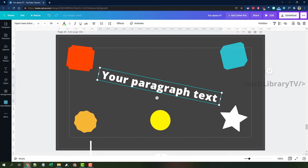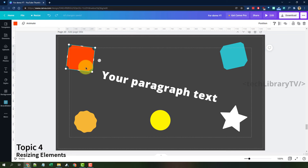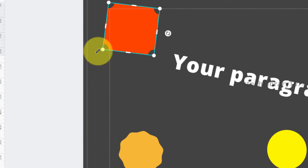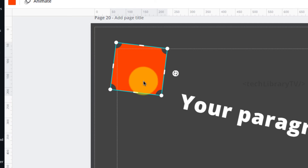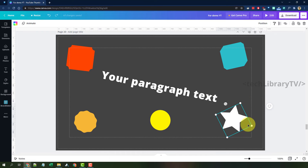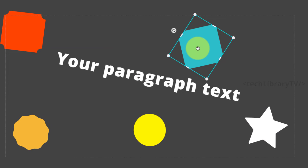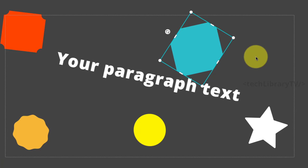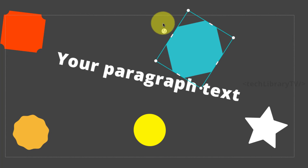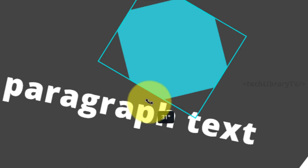Finally, resizing elements. Note that resizing only works when an element has adjustment handles on both the corners and the edges. If an element only has corner handles, the keyboard resize shortcuts won't work. For elements that do support it, use Control plus the arrow keys to resize by one pixel — Control + Right Arrow expands to the right, Control + Down Arrow expands downward.